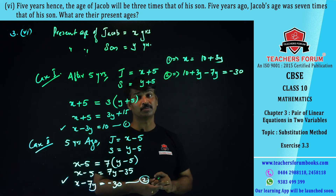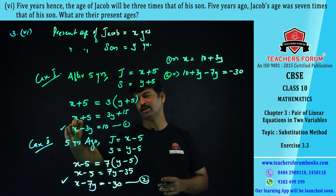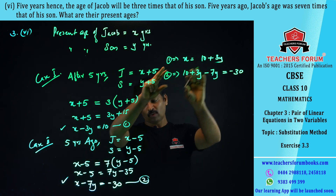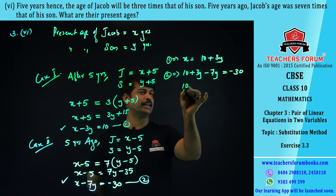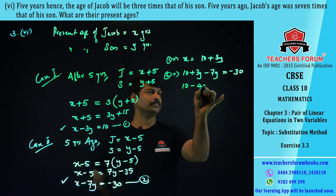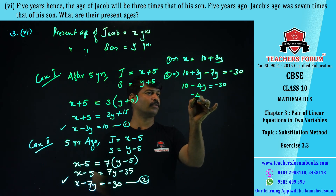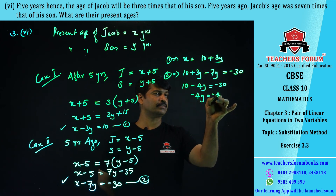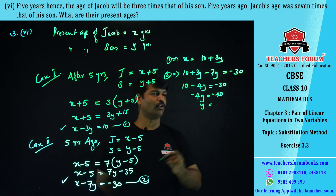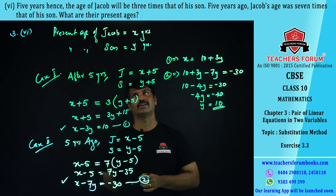This gives: 10 − 4y = −30, so −4y = −40, and y = 10. The son's present age is 10 years.